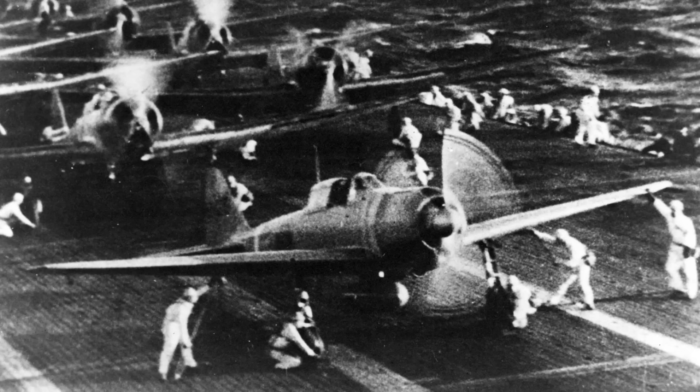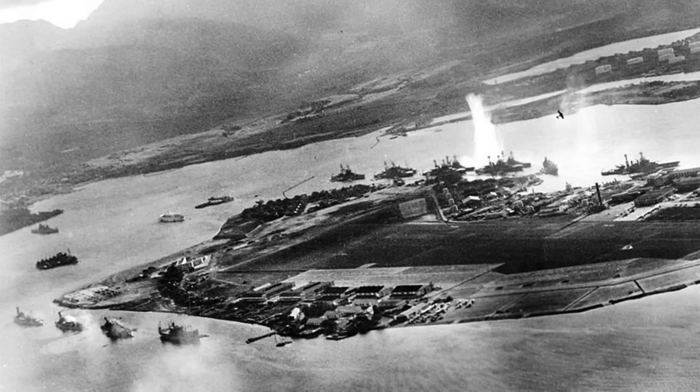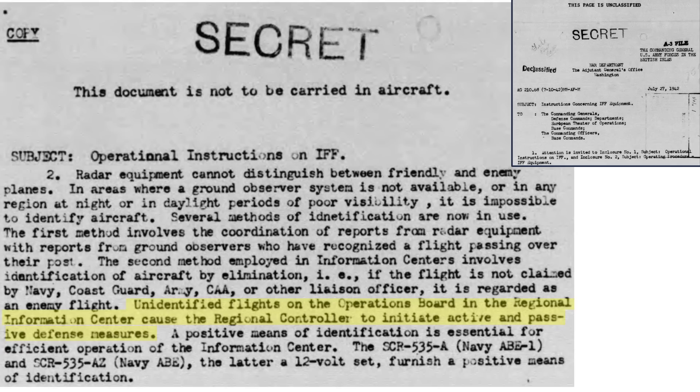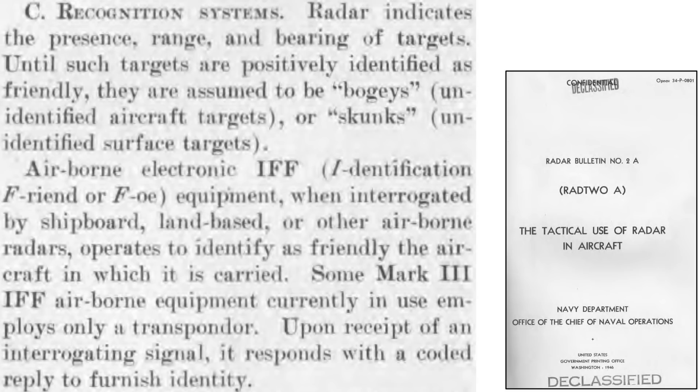The Oahu radar operators were told the Japanese attacking PIP radar indications was a group of B-17s. No U.S. IFF system was operational in 1941, so no alert was sounded. Any unidentified flight can be met with defensive measures. A simplified description of the IFF system is listed on a page from a 1946 Tactical Use of Radar and Aircraft document.